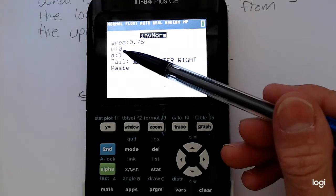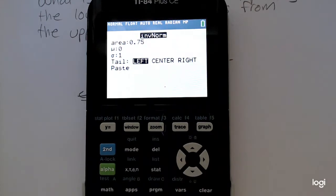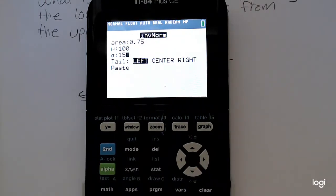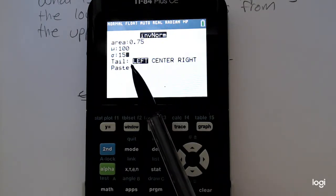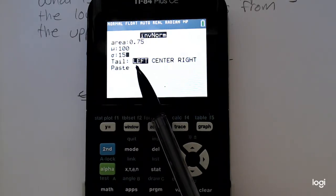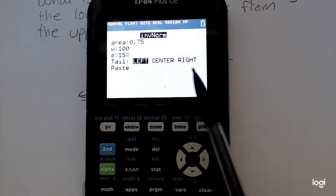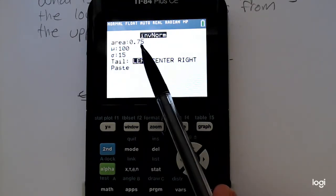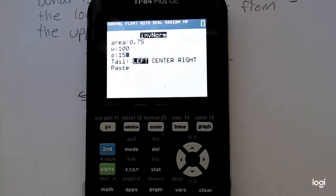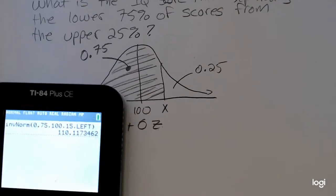We want that cumulative area to be 0.75. If we leave it at 0 and 1 for mu and sigma, it will output a z-score. So I'm going to change that to 115. So what this part here means is, what does the shaded area look like? Is it to the left of the x-value? Is it between two x-values that are symmetric about 0? Or is it an upper tail? Because we're separating the lower 75%, that's what I put in, from the upper 25%, I want to leave that at left. So that IQ score is about 110.12.